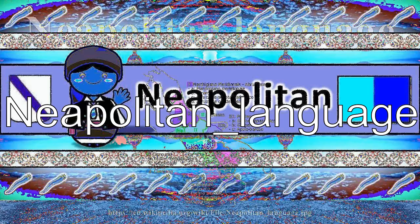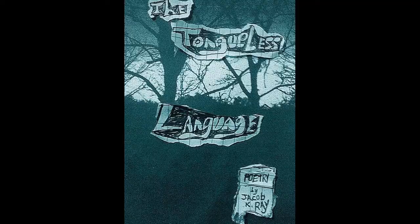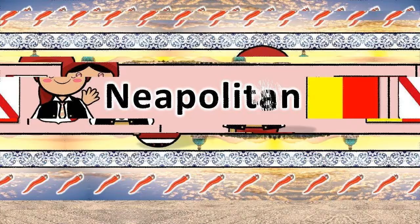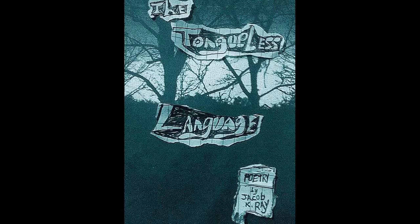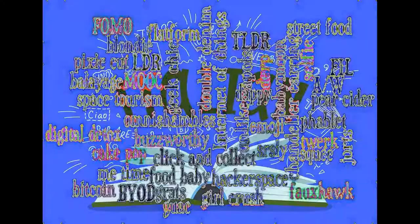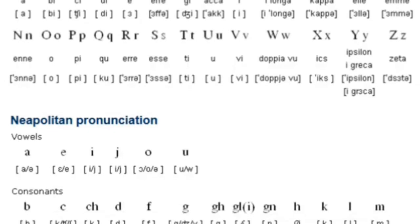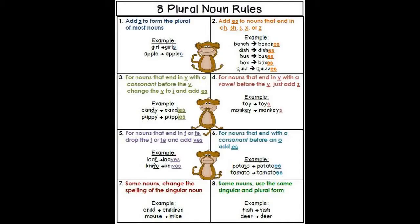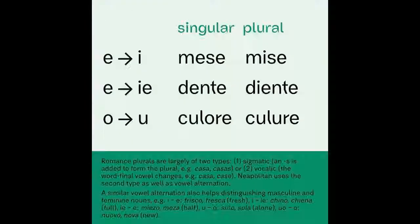Neapolitan language in the United States has considerable contact with English and the Sicilian languages spoken by Sicilian and Californian immigrants living alongside Neapolitan-speaking immigrants. Subsequently, Neapolitan in the US is now significantly different from contemporary Neapolitan spoken in Naples, with English words often used in place of Neapolitan words, especially among second-generation speakers.